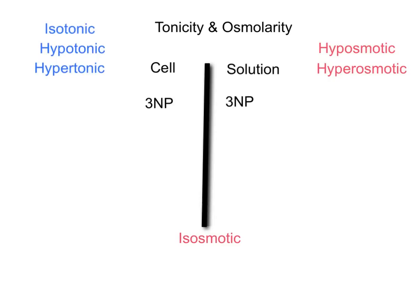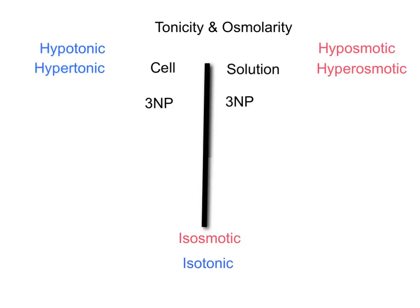Now, looking at the movement of water — water always moves towards the higher concentration of non-penetrating particles. In this case they're both equal, so there will be no movement of water. The tonicity will be isotonic, because the cell will neither shrink nor swell.